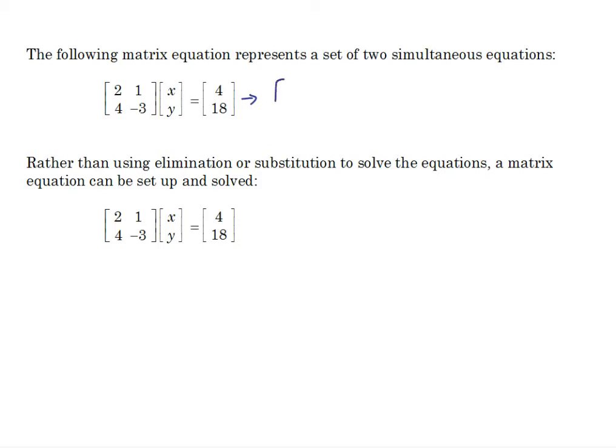If we expand out the left hand side, row times column so we're going to get 2x plus 1y, and bottom row times column so 4x minus 3y.